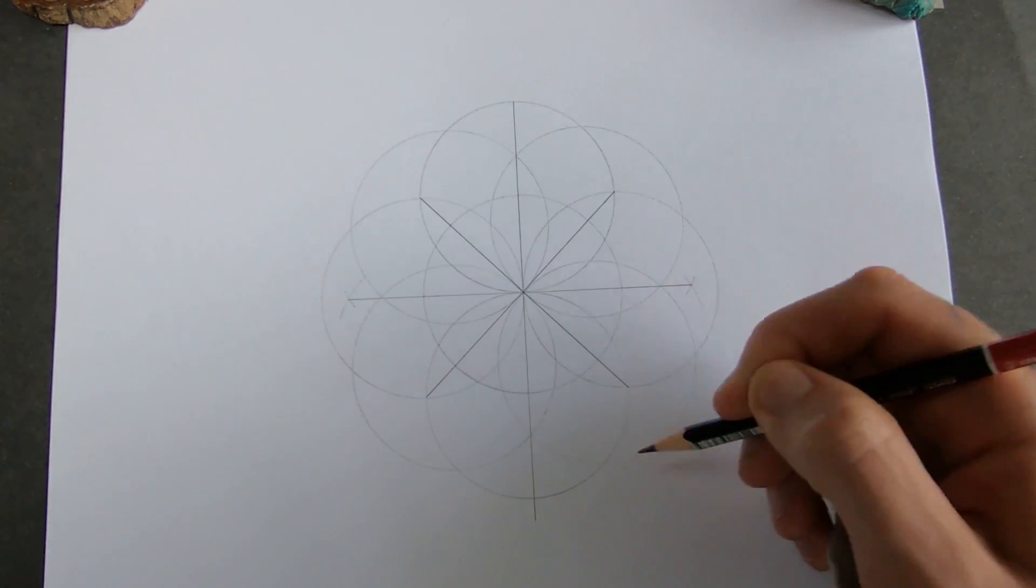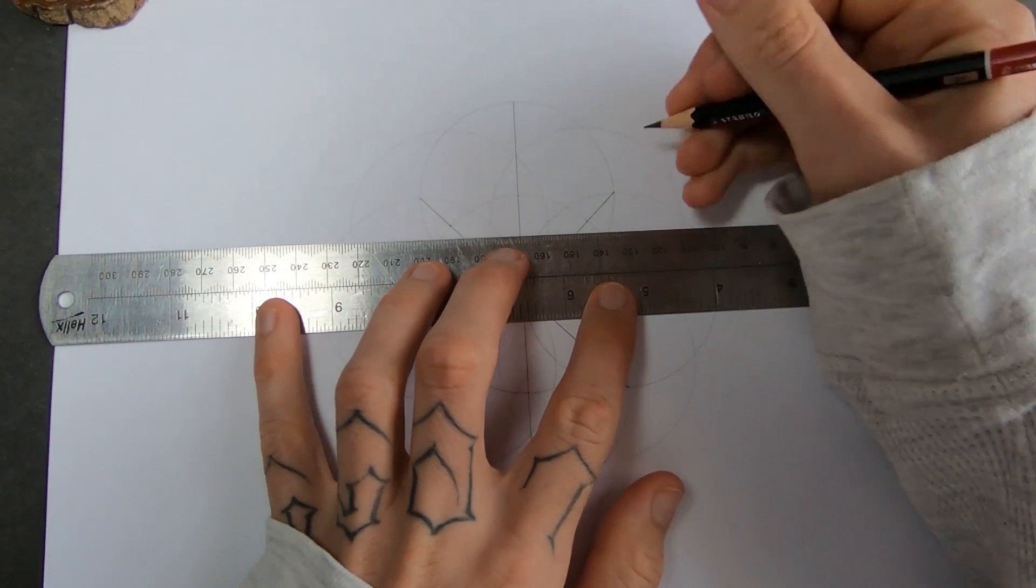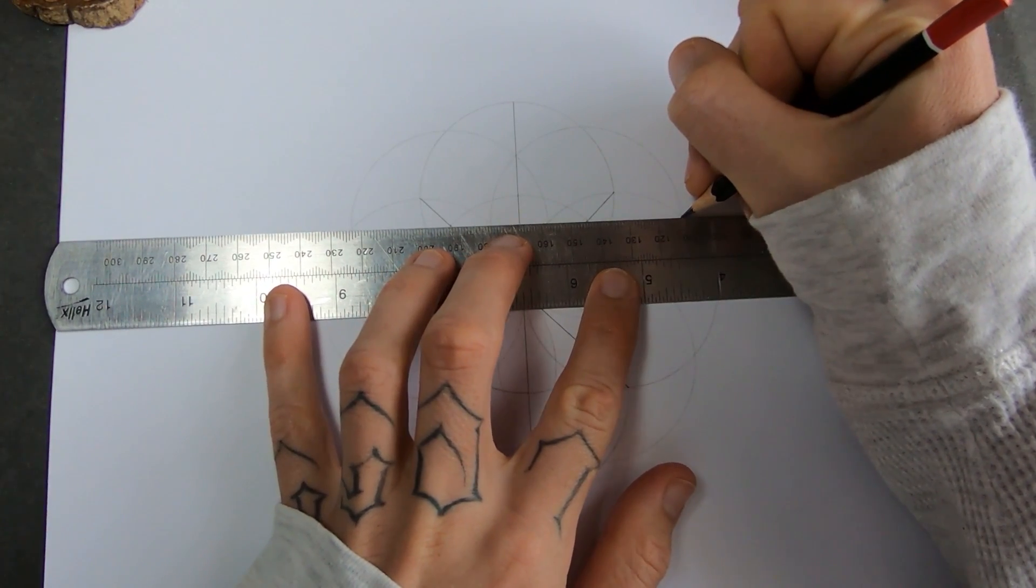We've got 1, 2, 3, 4, 5, 6, 7, 8. If I connect them, I should have an octagram, an 8-pointed star.